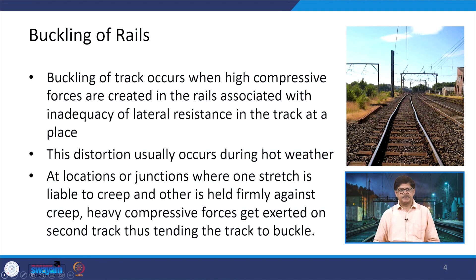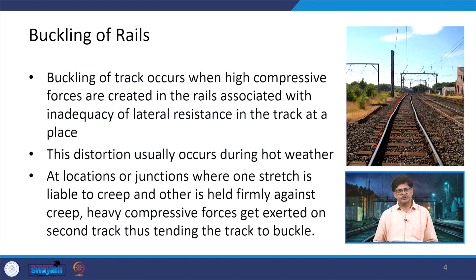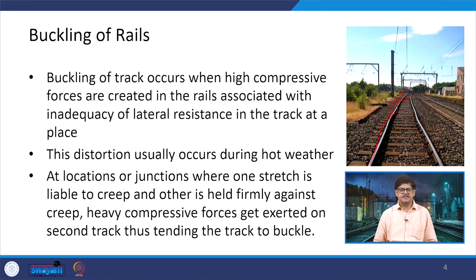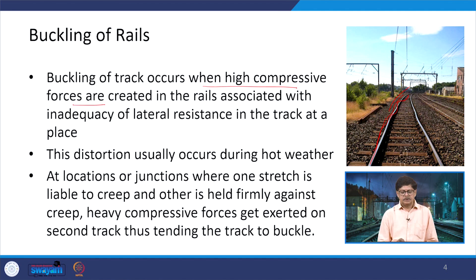Let us start with the first aspect: buckling of rails. In the photograph shown on the right-hand side, you can see a change in the alignment of the rail - they are not straight. Even if it is a curved section, it should have been a smooth curve, but there is a change in direction of that rail. Buckling occurs when high compressive forces are created in the rails, associated with the inadequacy of lateral resistances in the track.